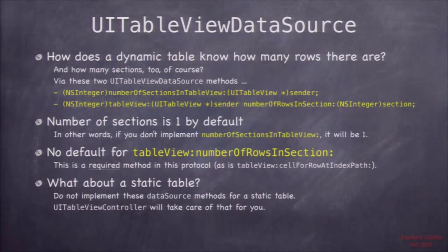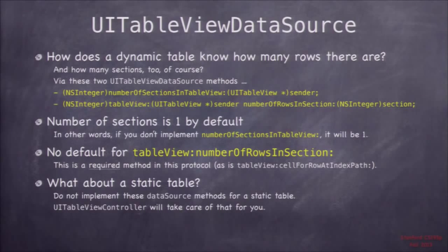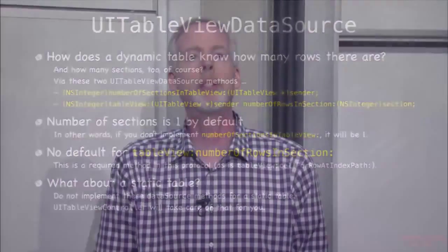For a static table you don't have to do any of this — you don't have to implement cellForRowAtIndexPath, numberOfSectionsInTableView, or numberOfRowsInSection. It's all taken care of for you by UITableViewController. For static tables, just edit in the storyboard how you want it and don't worry about any of this stuff.